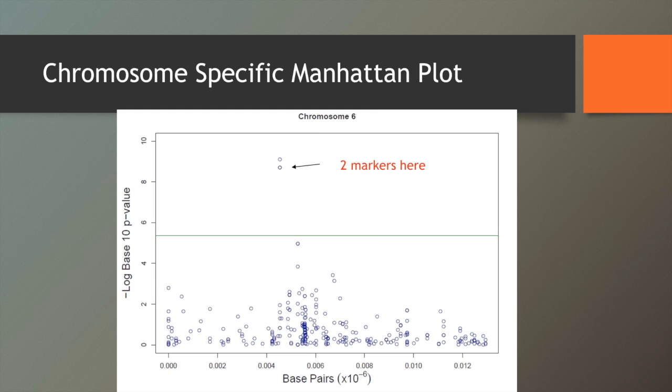GAPIT also generates chromosome-specific Manhattan plots. So for barley, there's this gene on chromosome 6 that has a very large impact, and there's actually two markers that are just stacked right on top of each other. And so again, those are showing up, and you can cruise through each of the other chromosomes.